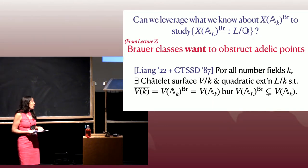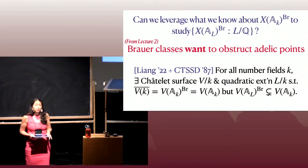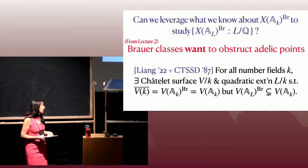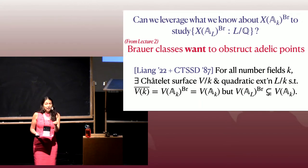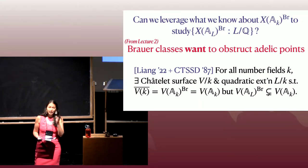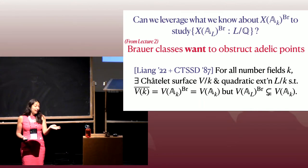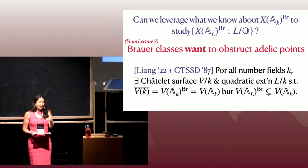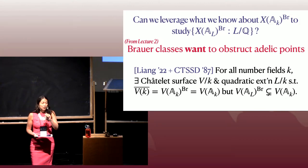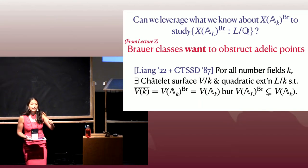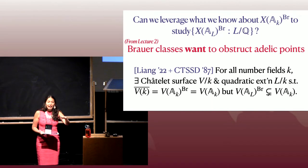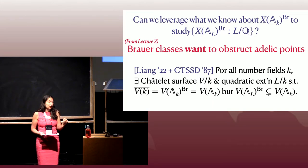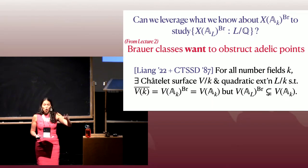There's a recent paper of Liang, using a result of Colliot-Thélène, Sansuc, and Swinnerton-Dyer from 1987. This says that if you fix any number field K, there is a Châtelet surface over that field and a quadratic extension such that over K, the Brauer elements don't do anything, but over this extension they carve out a proper subset. So even if Brauer classes don't do anything over K, when you go up to an extension, it gives them more power to obstruct.